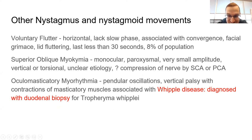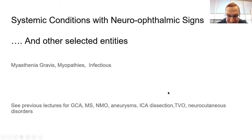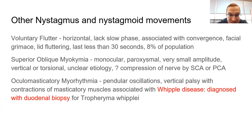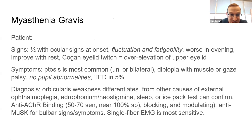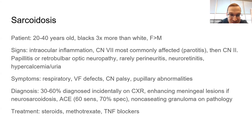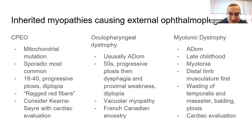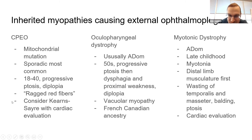Whipple disease is almost always asked in some fashion — remember it as a cause of nystagmus. Myasthenia — we're all familiar with that. CPEO is another rare one they like to ask about: it's mitochondrial but sporadic is actually the most common. You tend to have ptosis but diplopia is fairly rare because of symmetric involvement. The buzzword is ragged red fibers, and you need cardiac evaluation for conduction defects.